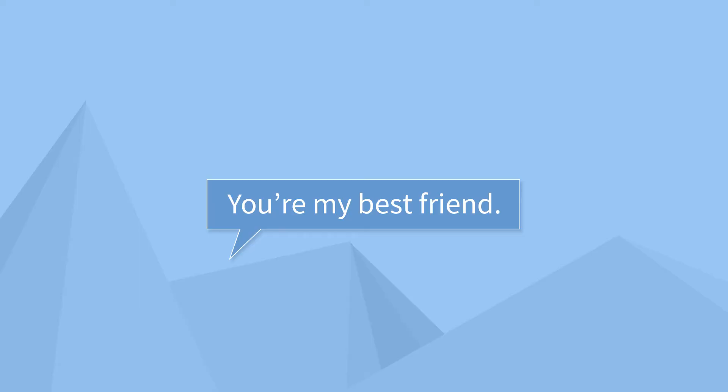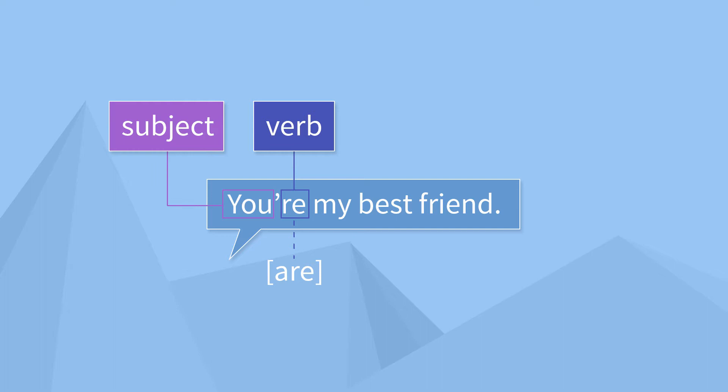Sentence number three: 'You're my best friend.' The verb here might not be so obvious. Is there an action? No. So there must be a state. The state here is actually just being something — in this case, being my best friend. The verb in this sentence is 'are,' which is another form of 'to be.' And who is my best friend? You are. So the subject is 'you' and the verb is 'are.'